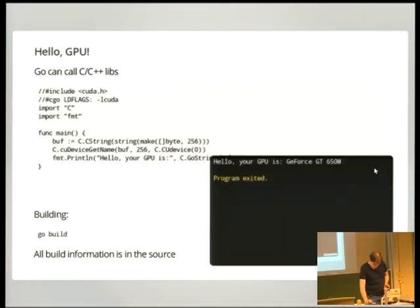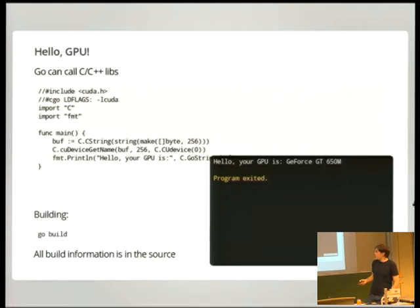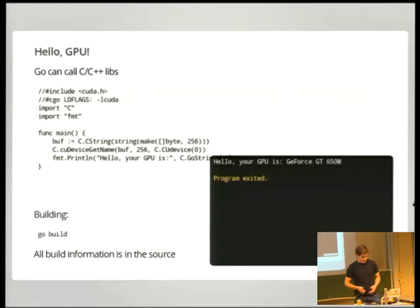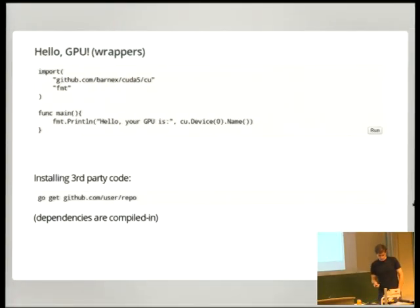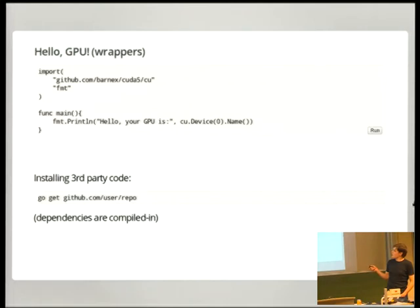This has now called NVIDIA's CUDA driver to ask my GPU's name. It works, but it's a bit unwieldy and there are conversions between C types and Go types all the time. What you really want is an idiomatic Go library. I've written one for CUDA. Go makes it easy to import third-party libraries — you import by URL. You install it with 'go get' and that's it.